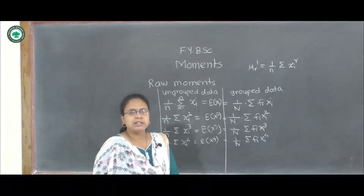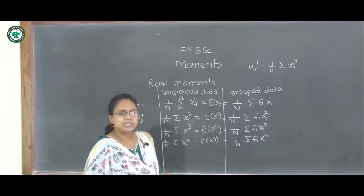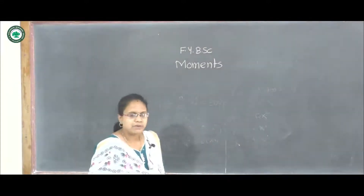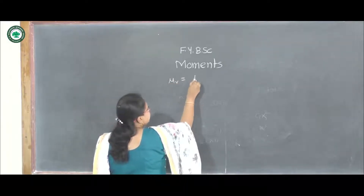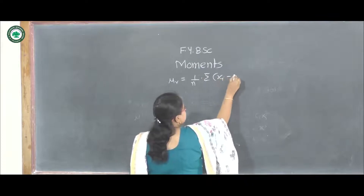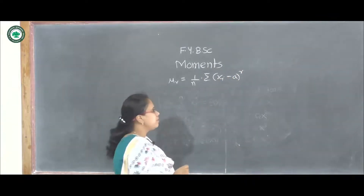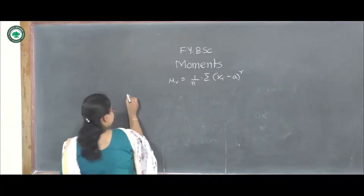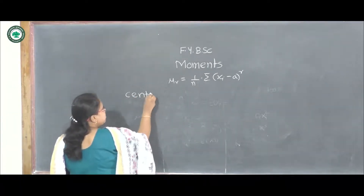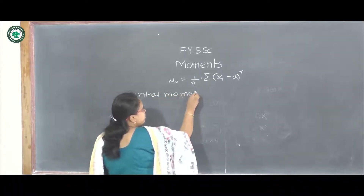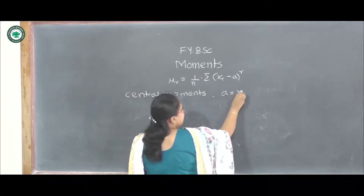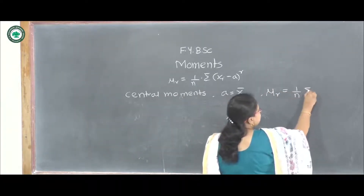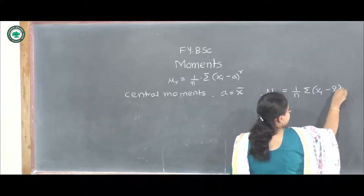By choosing different values of a we get different types of moments. The next type is the central moment. From the general definition μr = (1/n) summation of (xi minus a) raised to r, if we put the value of a as x̄ (the mean), then we get the central moments. Central moments are denoted by the letter μr (without dash). Choosing a equal to x̄, the definition for the central moment is μr = (1/n) summation of (xi minus x̄) raised to r.